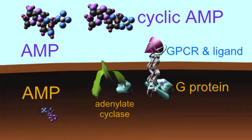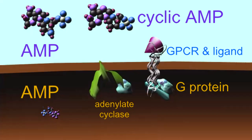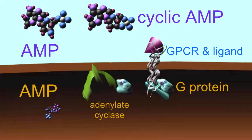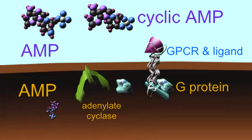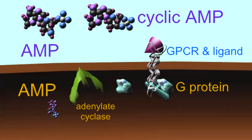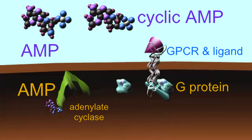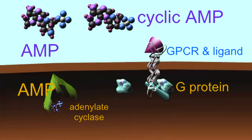Cyclic AMP is a second messenger. It then activates a number of targets such as PKA, protein kinase A, or the cyclic AMP-dependent kinase.